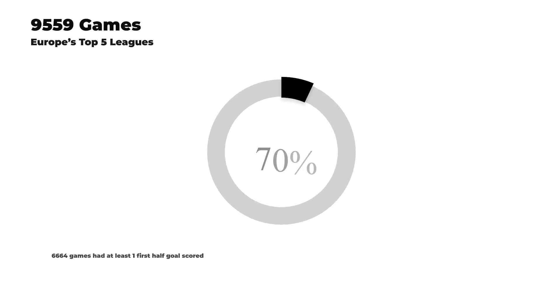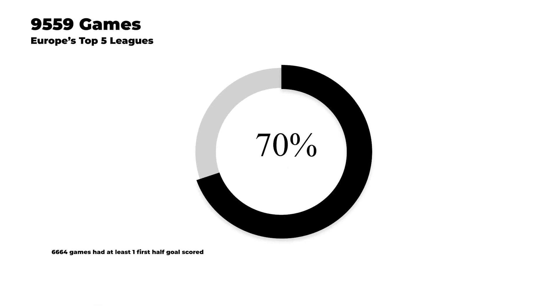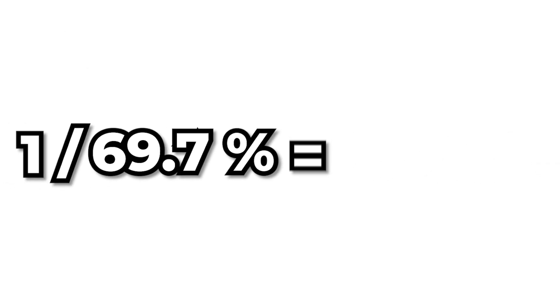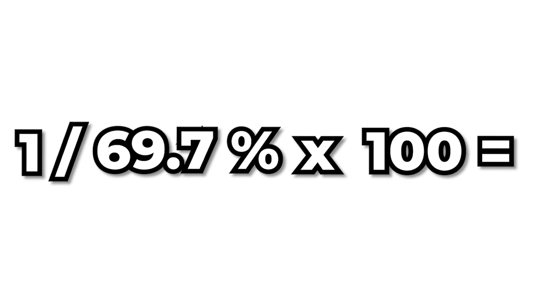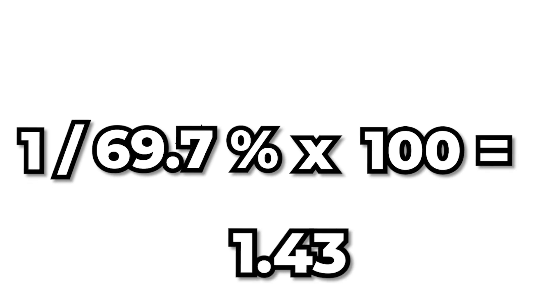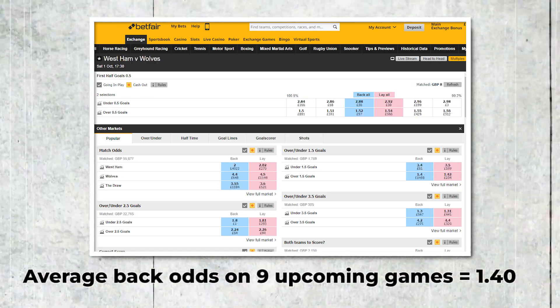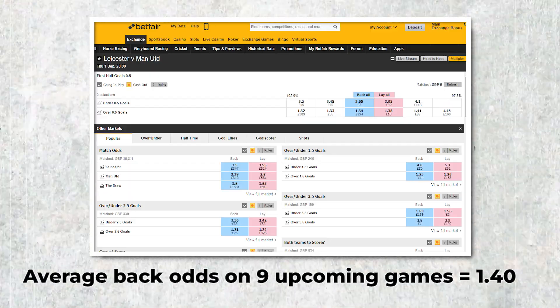To understand why the odds start off so short, you need access to long-term statistics showing the probability of a goal in the first half. Across just under 10,000 games I've collected data for, 69.7% of games have had at least one goal scored in the first half. If we turn that percentage into decimal odds by doing 1 divided by the percentage and multiplying by 100, we get what should be the average odds for a first half goal — and comparing that to average back odds in upcoming games, we get a fairly similar number.